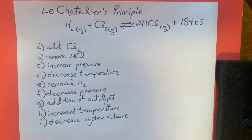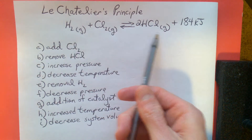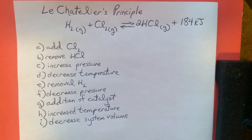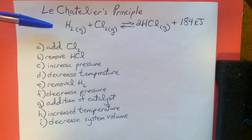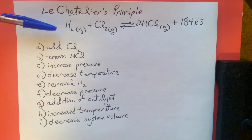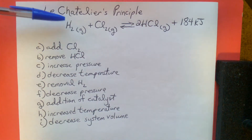Equilibrium is established in a reaction system when the opposing forward and reverse reactions are proceeding at equal rates of reaction. Also remember that the equilibrium expression value is temperature specific, and the expression depends on the stoichiometry of the equation. That's why our reaction equation needs to be balanced before we proceed.